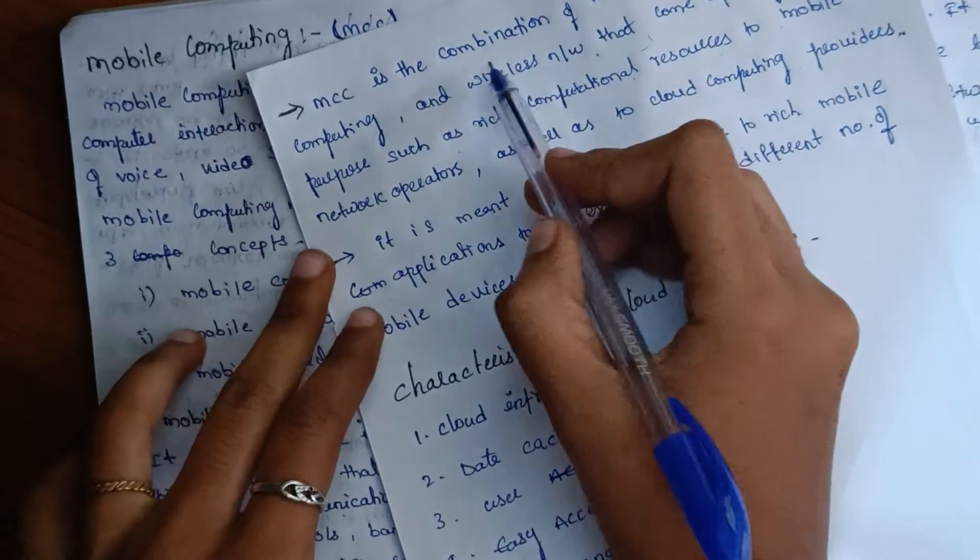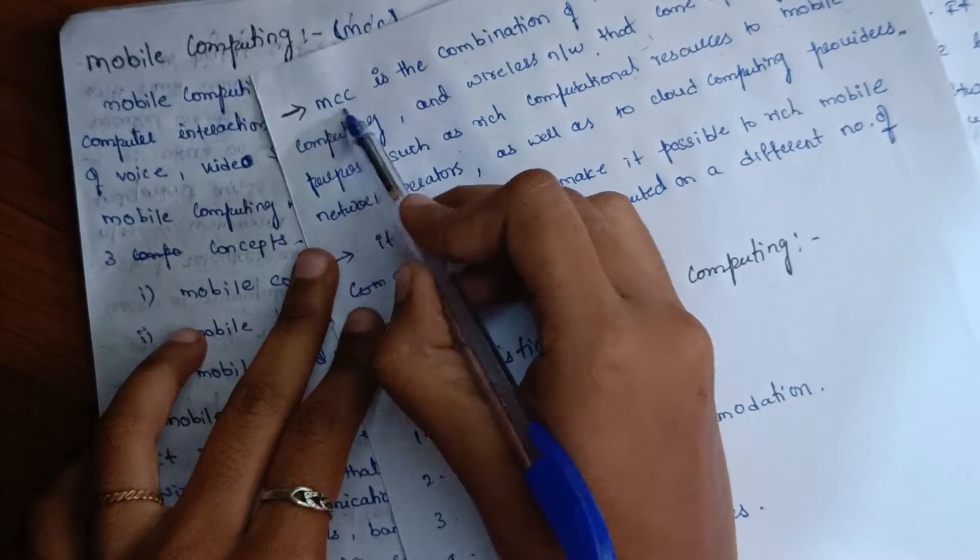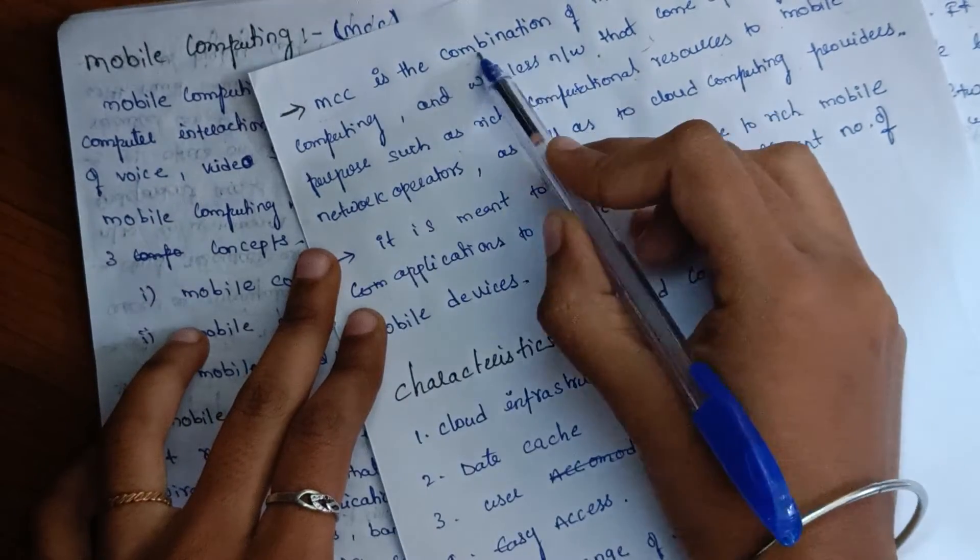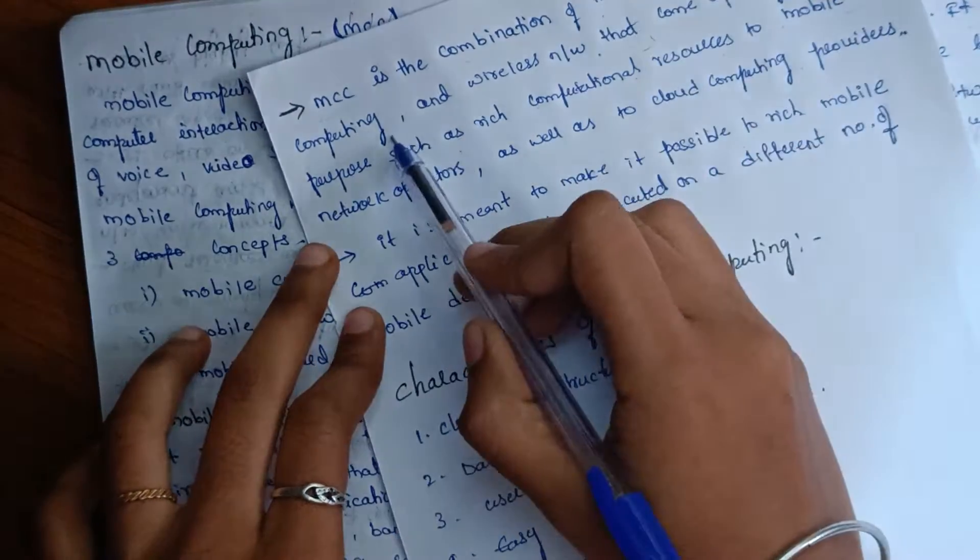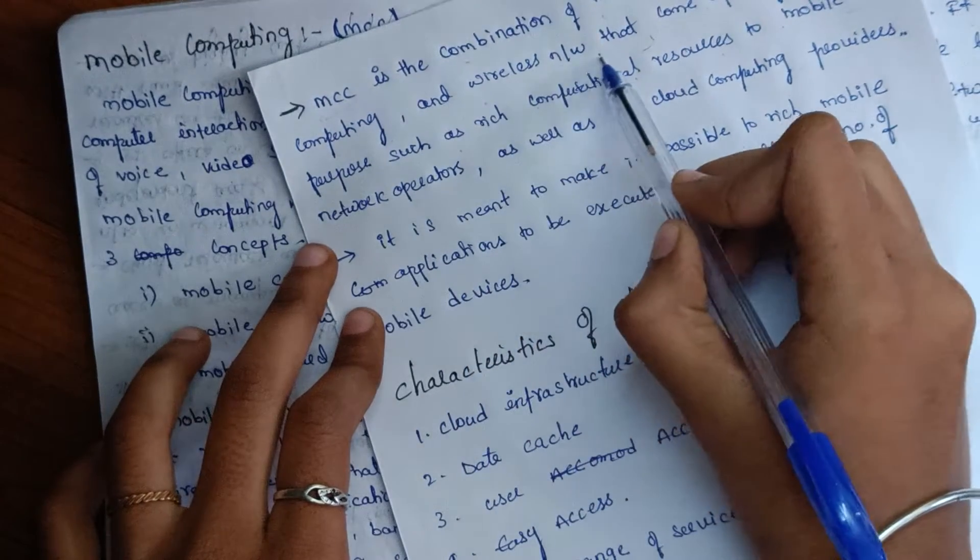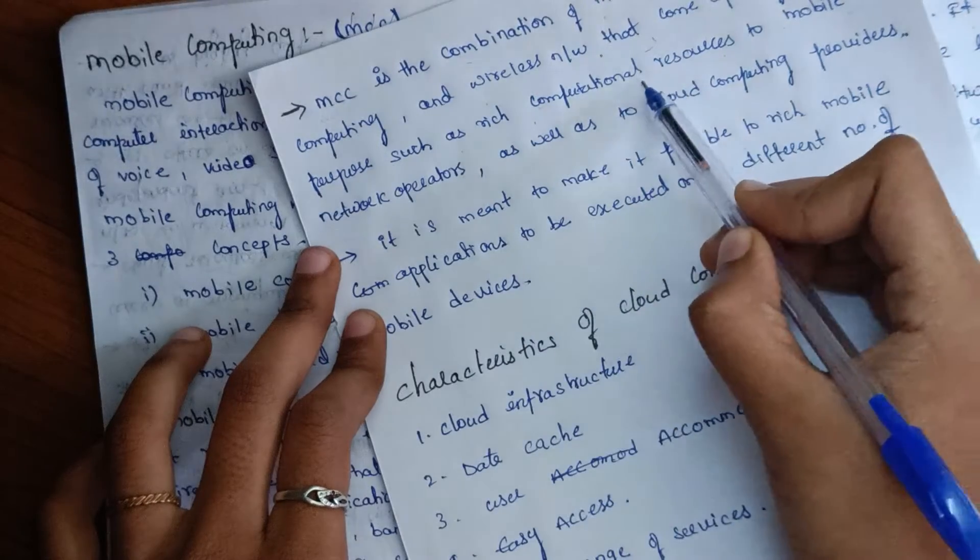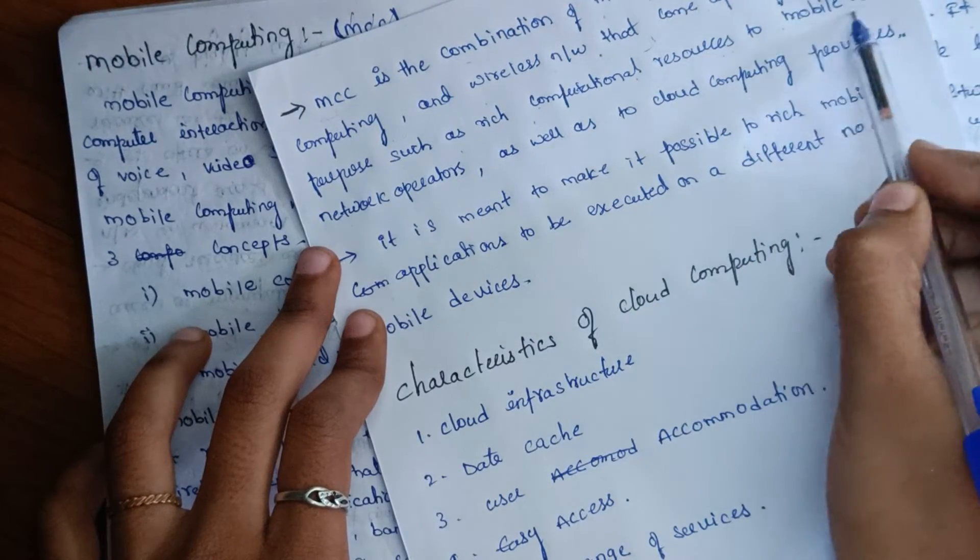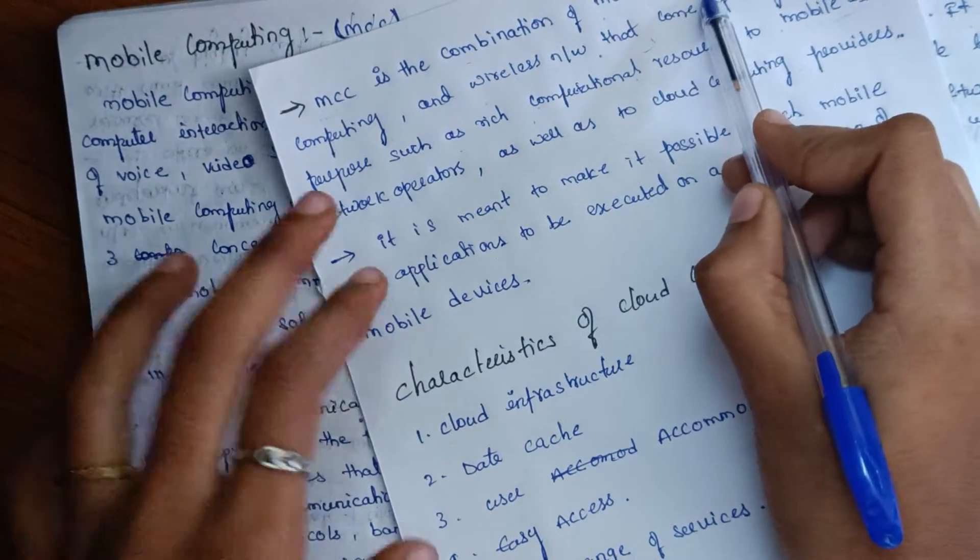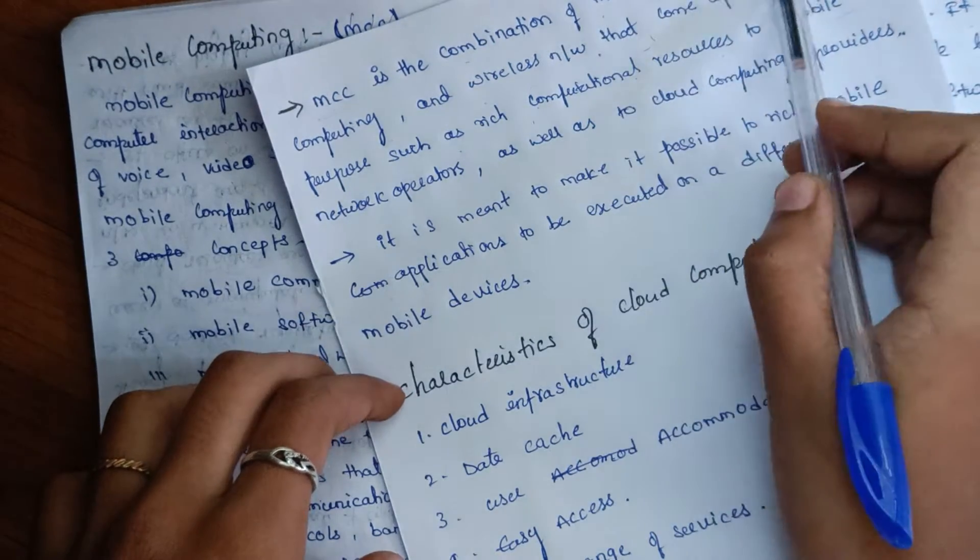What is mobile cloud computing? It is a combination of mobile computing and cloud computing, and also wireless networks that come together to provide rich computational resources to mobile users.